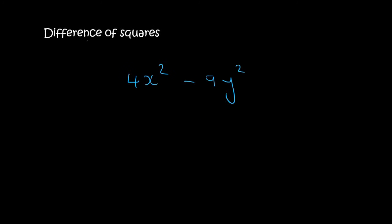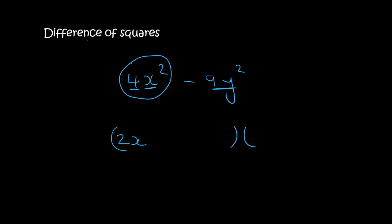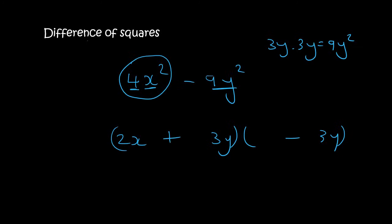Here you can't take anything out. But notice that 2 times 2 gives 4, and x times x gives x², so the first term is (2x)². And 3y times 3y gives 9y², so the second term is (3y)². There's a minus between them, so we open up two brackets: (2x + 3y)(2x - 3y).